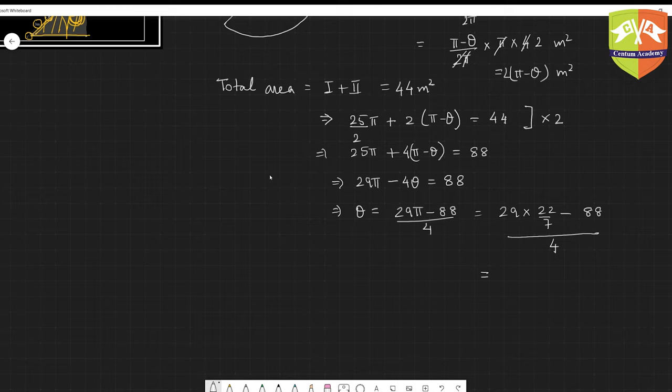You can take 22 common if you see. This is 22 common and you will get 29 by 28, 7 into 4 minus 4 by 4. I hope you are getting the calculation. There was this 4 also, so I have included that within.